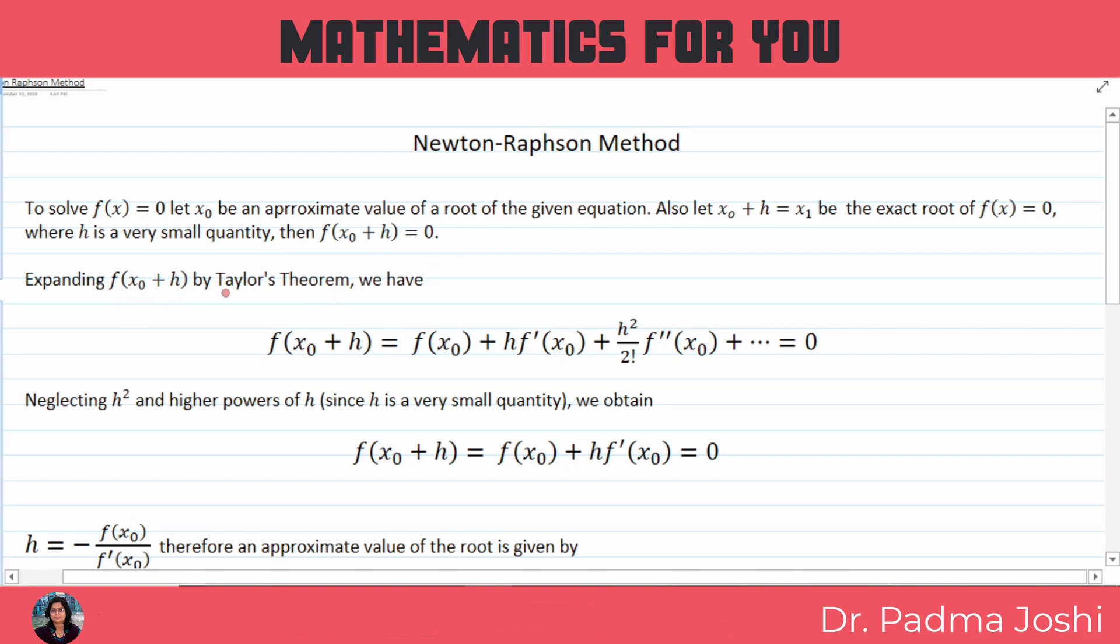Expanding function of x0 plus h by Taylor's theorem, we have function of x0 plus h is equal to function of x0 plus h into f dash x0 plus h square by factorial 2 f double dash x0 plus and so on will be equal to 0.